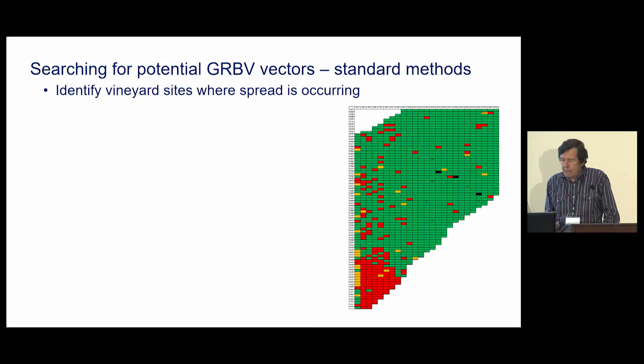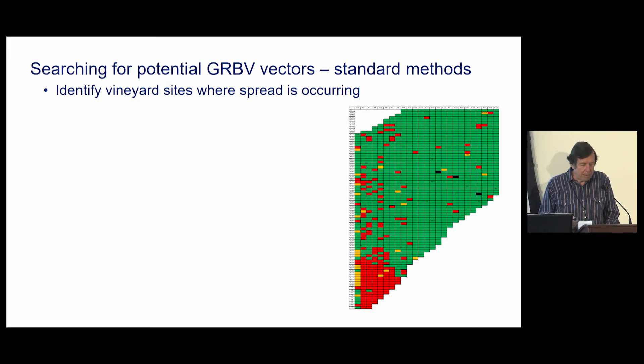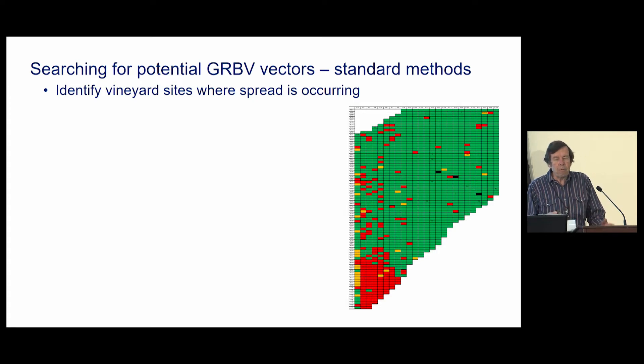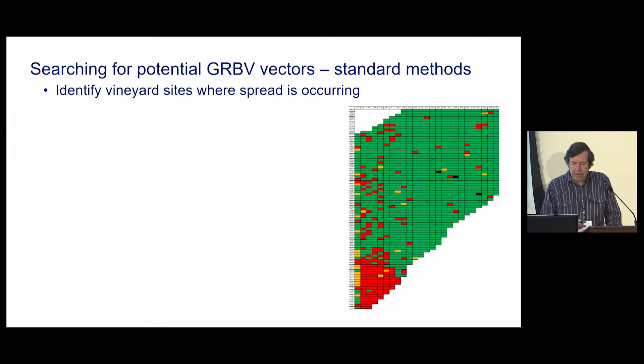My name is Frank Zalem. I'm a professor of entomology here at UC Davis, and I'm going to tell you a little bit about our experiences with red blotch. When we first started working on this problem was about 2013, and my role was to try to determine if there was a vector for red blotch disease.